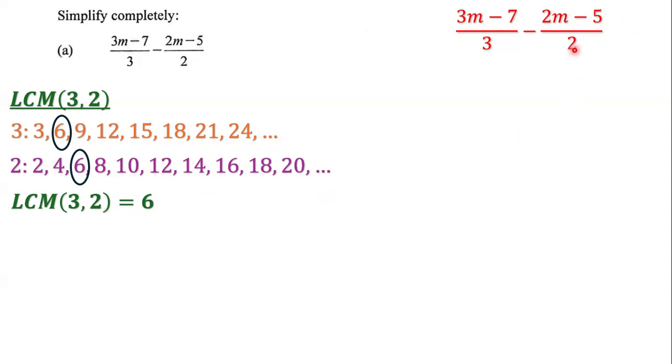We ask ourselves, what times 2 gives me 6? The answer is 3, so 2 times 3 gives 6. Whatever I do to the bottom, I must do to the top. What times 3 gives me 6? 3 times 2 gives 6. Whatever I do to the bottom, I must do to the top as well. So the denominators are the same, and we have 2(3m - 7) and 3(2m - 5).